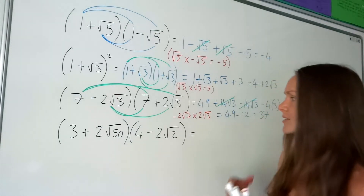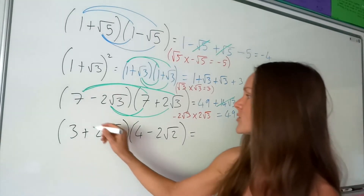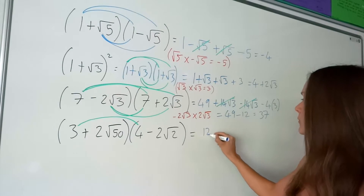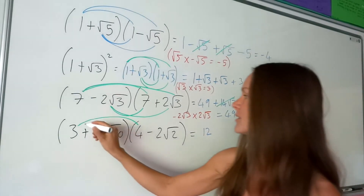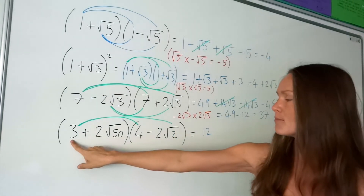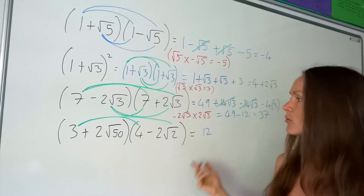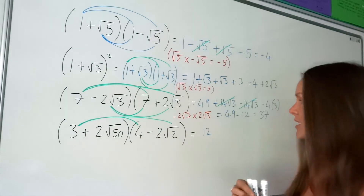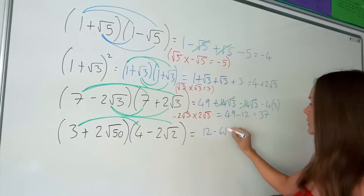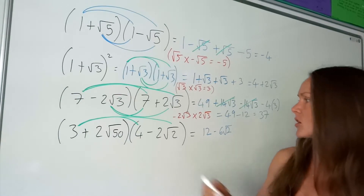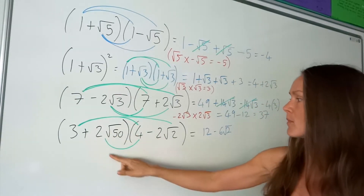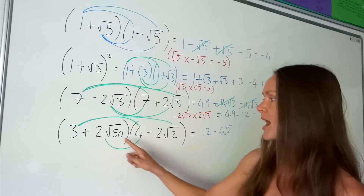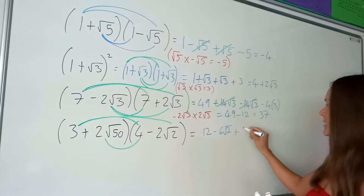On to the last one. Again, we're just expanding the brackets. Starting by multiplying the first two terms: 3 multiplied by 4 is just 12. Then multiplying this 3 with that term over there: 3 multiplied by negative 2 root 2. You're just multiplying those two numbers together — 3 multiplied by negative 2 is negative 6, and then that root 2 is still there, giving negative 6 root 2. Now I've got 2 root 50 multiplied by 4: 2 multiplied by 4 is 8, and I'm left with root 50, so it's 8 root 50.